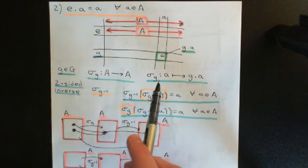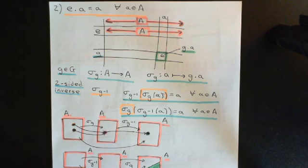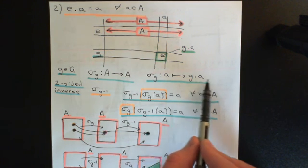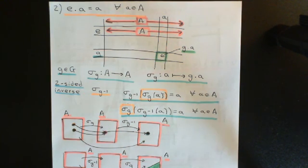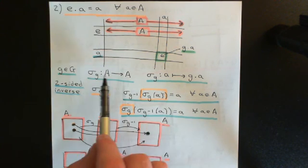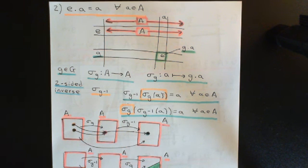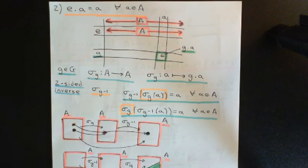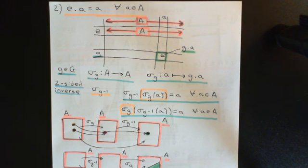This is quite clearly a mapping from the set A to the set A, because it takes elements in A and maps them onto other elements in A — whatever g·a is, it is always another element of A. We showed in the previous video that this is actually a bijective map, and therefore a set permutation, since it's a bijective mapping from A to itself.